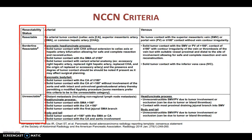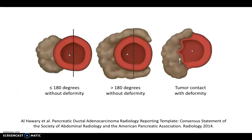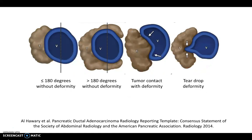We all know the NCCN criteria based on which we classify pancreatic tumors as resectable, borderline resectable, or unresectable, and we do that based on tumor abutment versus encasement or deformity of adjacent arteries as well as veins.